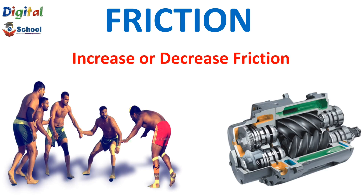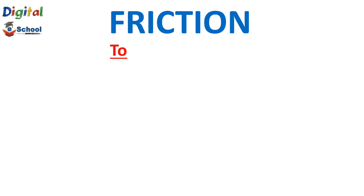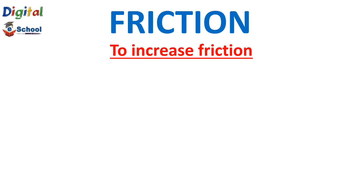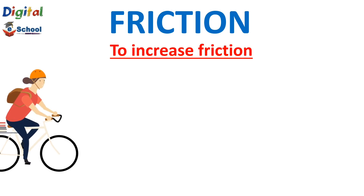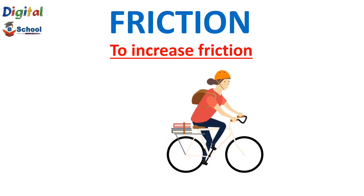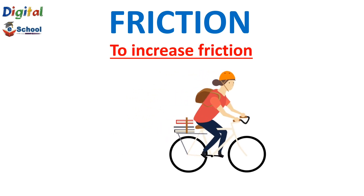The next topic is how to increase or decrease friction. We have seen that friction produces heat and reduces machine efficiency. Now let's see how we can increase friction. Let's take the example of riding a bicycle or any automobile — we use brake pads and the brake system for that.